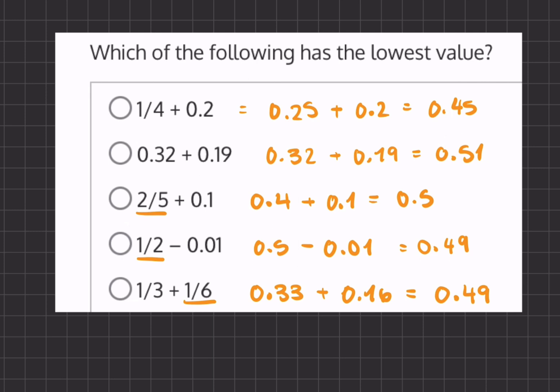Now, we have all of our answers, and we just have to compare. The smallest value, the lowest value, will be 0.45, and therefore, 1/4 plus 0.2 will give us our lowest value.